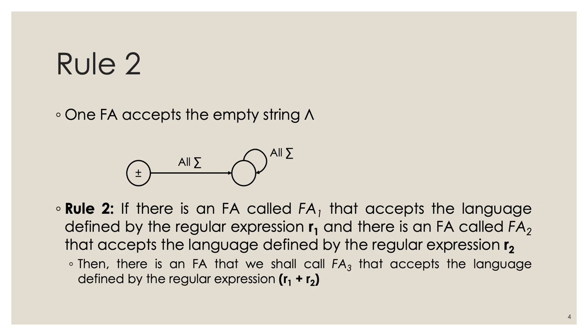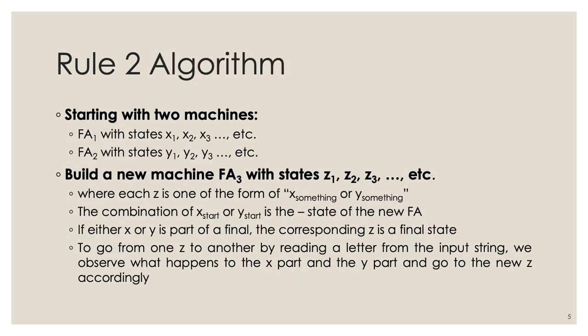Rule number 2 is the main subject of this video. If there is an FA1 that accepts the language defined by regular expression R1, and an FA2 that accepts the language defined by regular expression R2, then there is an FA3 accepting the language defined by R1 or R2. We will prove this through the rule 2 algorithm, which is the second of the four algorithms in this part.